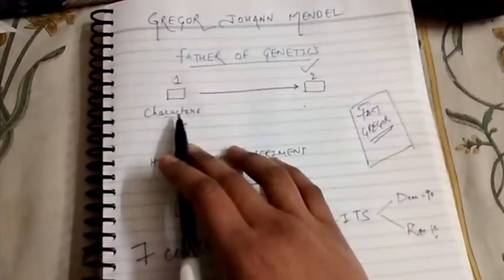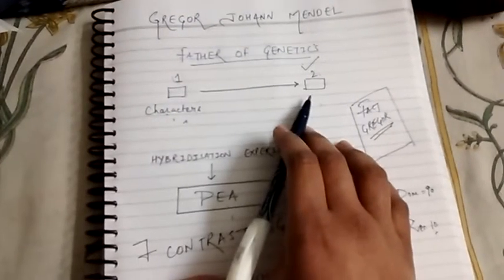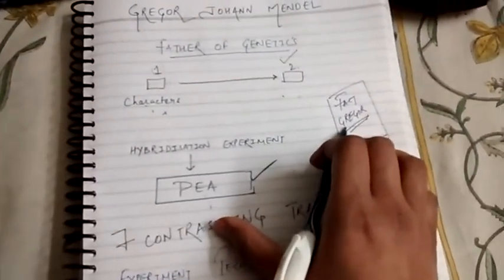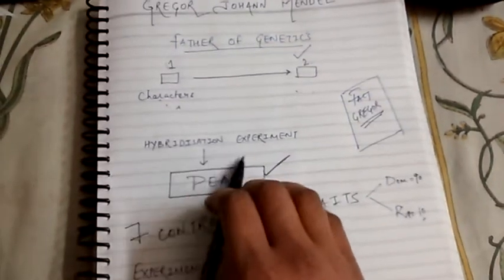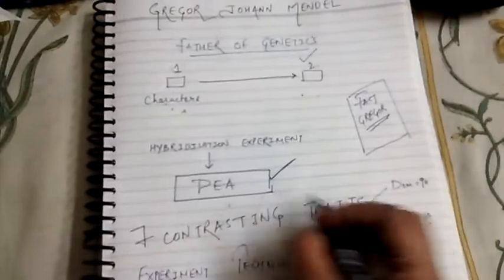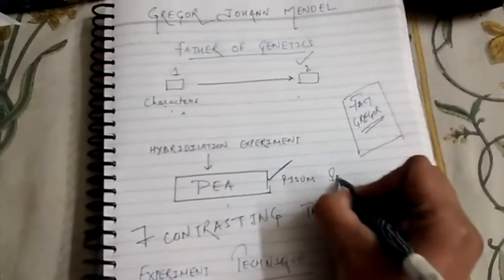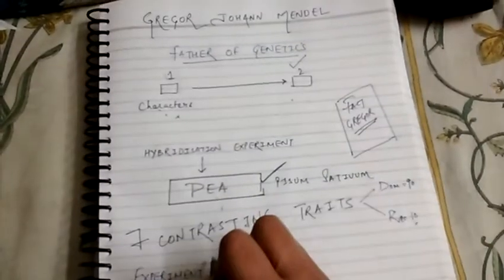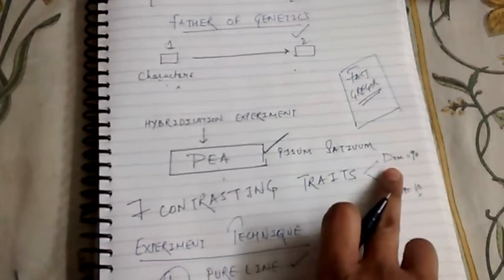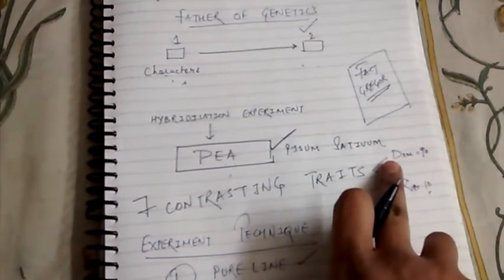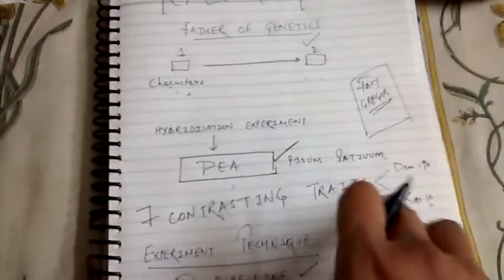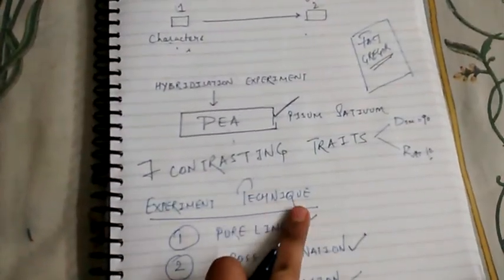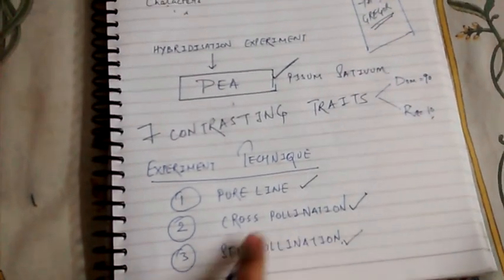Let us just rewind. Grigore Johan Mendel, father of genetics, talked about character transmission from one generation to the next. He got the name Grigore later on in his life. He did some hybridization experiments on pea, which we call Pisum sativum. He took 7 contrasting traits and divided them into dominant and recessive. Dominant are those found in most of the samples; recessive are those which show themselves less. The experiment technique he used was: he took pure lines, cross-pollinated them, and self-pollinated them.